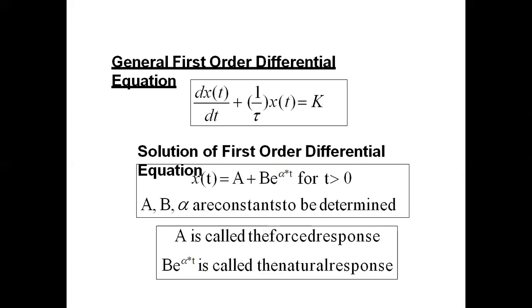The general first order differential equation is: (d/dt)X(t) + (1/τ)·X(t) = K, whose solution is X(t) = A + B·e^(−αt) for t > 0, where A, B, and α are constants to be determined. A is called the forced response, and B·e^(−αt) is called the natural response.